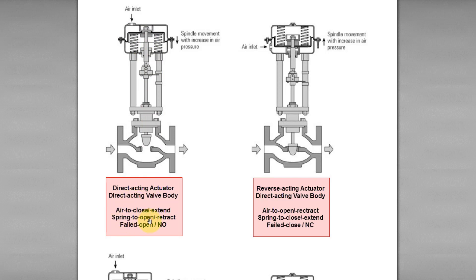Why is it also called spring to open, spring to retract, or fail-open? Because when the air is cut off, the compressed spring bounces upward. As a result, the stem or spindle moves upward or retracts outward. It is called fail-open because when you cut off the air, the plug moves outward and opens the valve body.